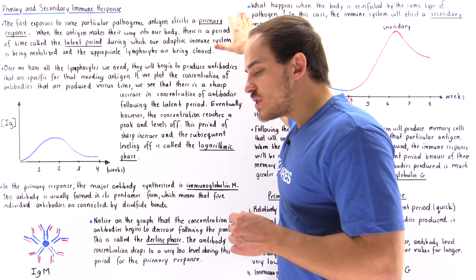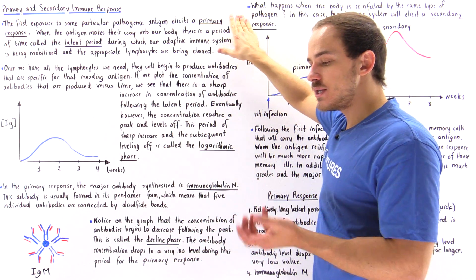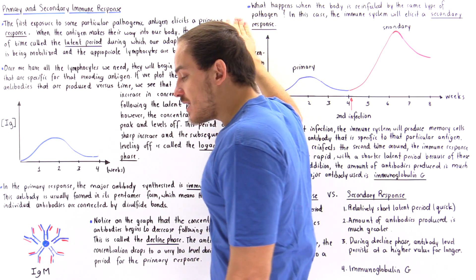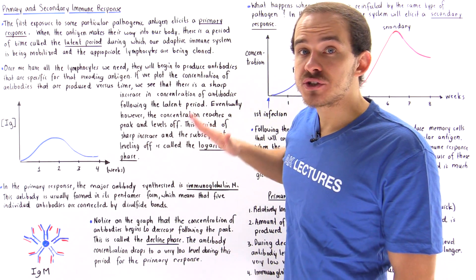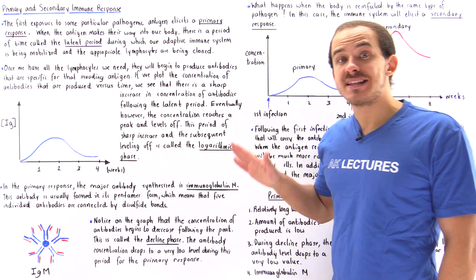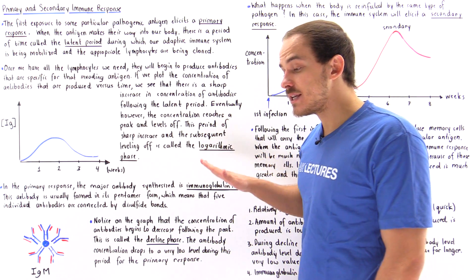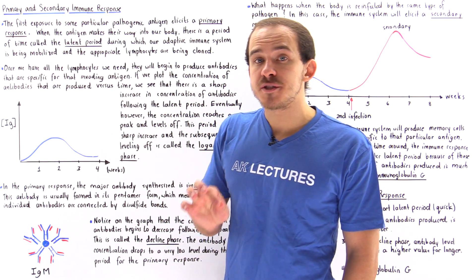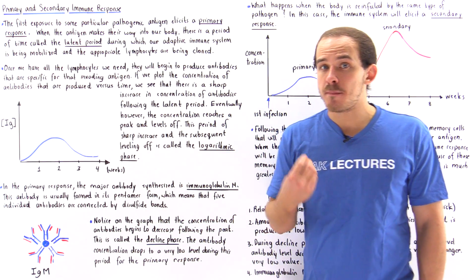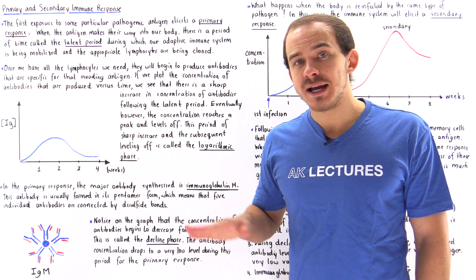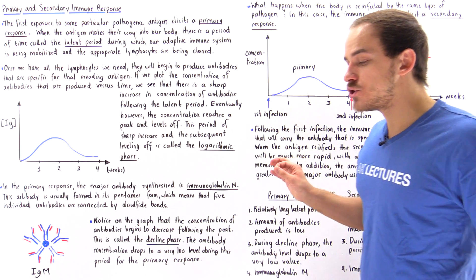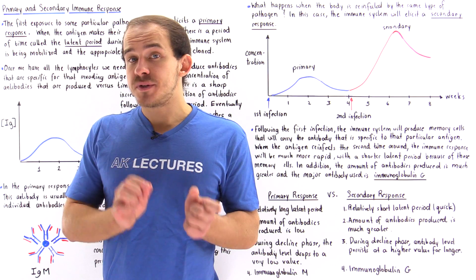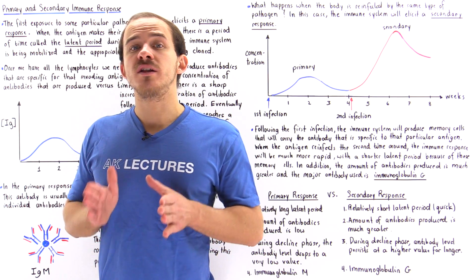Suppose our pathogen makes its way into our tissues and releases its pathogenic antigen. At this moment, our immune system has never actually seen this particular antigen. That means we're going to have no corresponding antibodies in our blood that can bind to that particular antigen, so the concentration of antibody specific for that antigen will be zero.